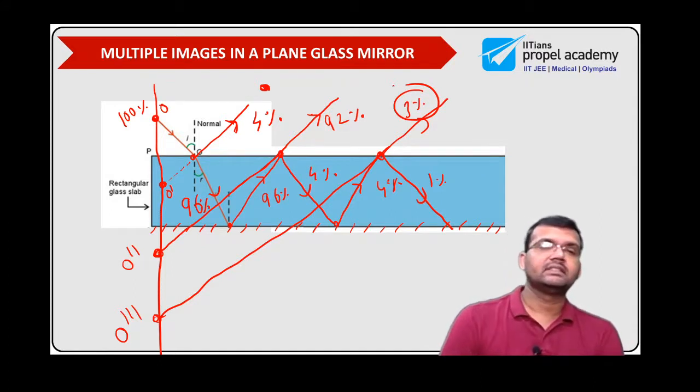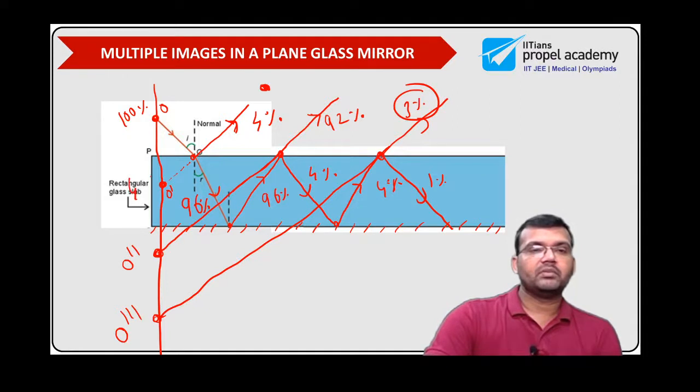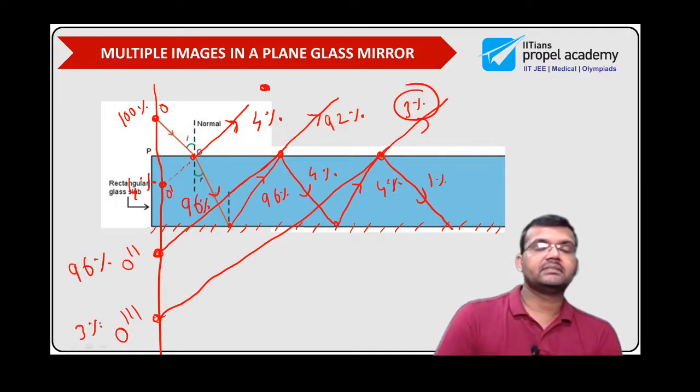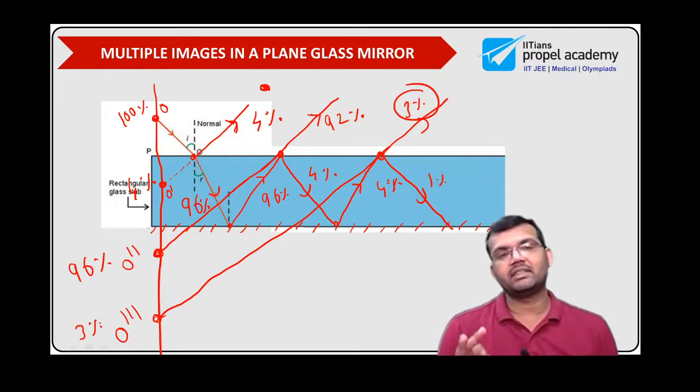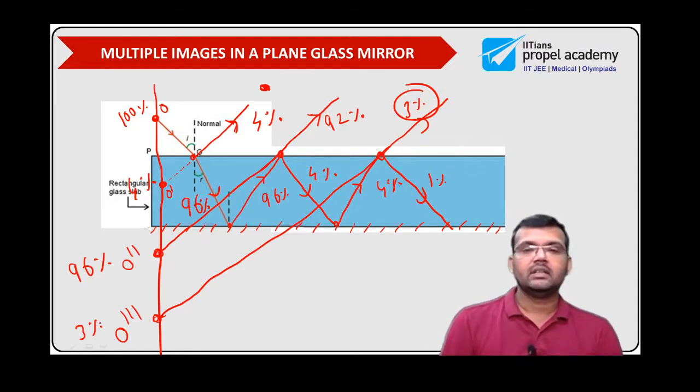So which means the first image what you got is from 4% of intensity. The second image is 96%. The third image may be 3%. Of course, this is a rough estimation what we are doing. But still makes sense to understand how things are happening here.